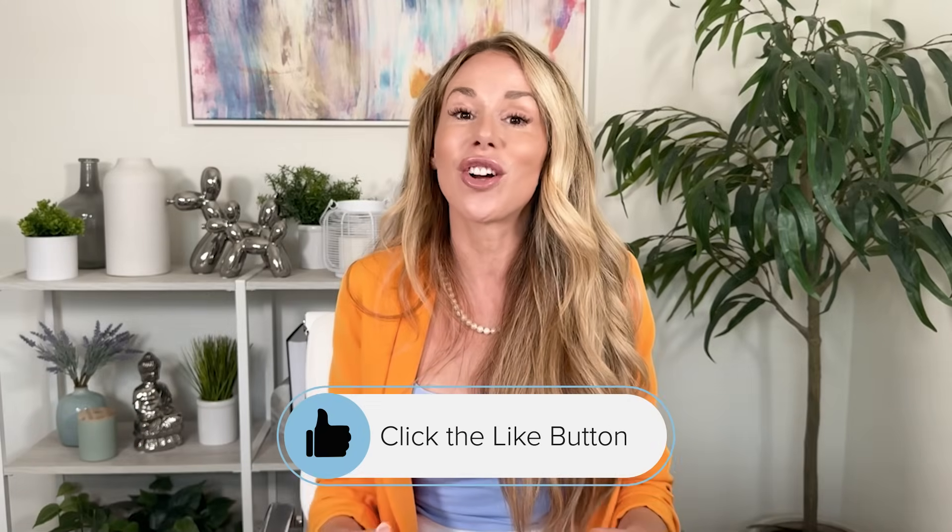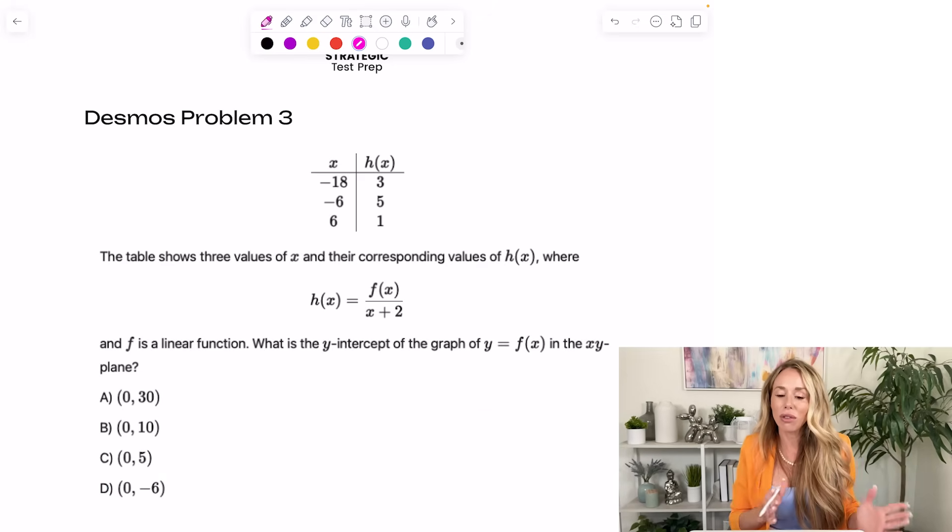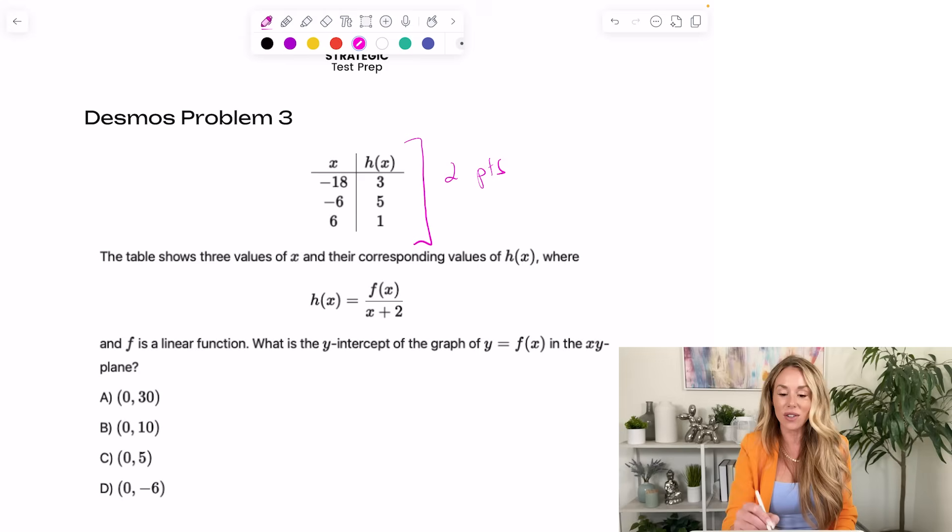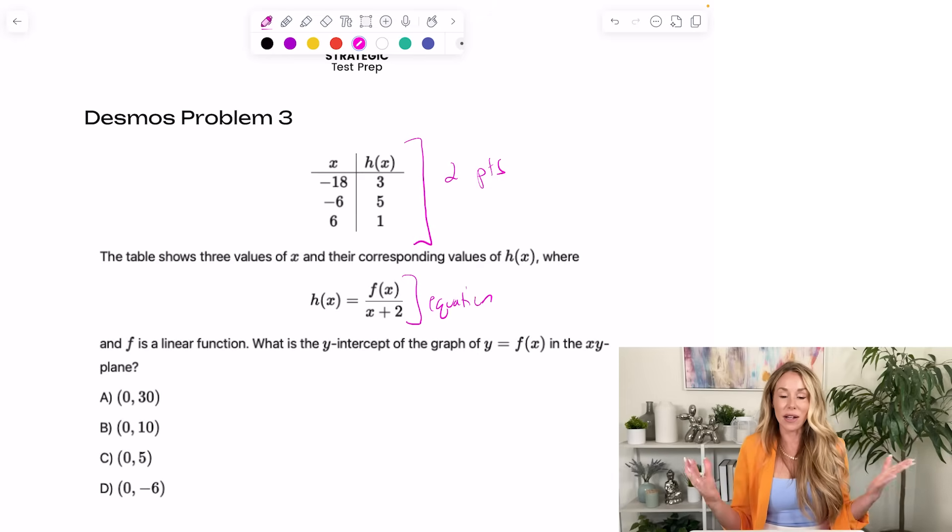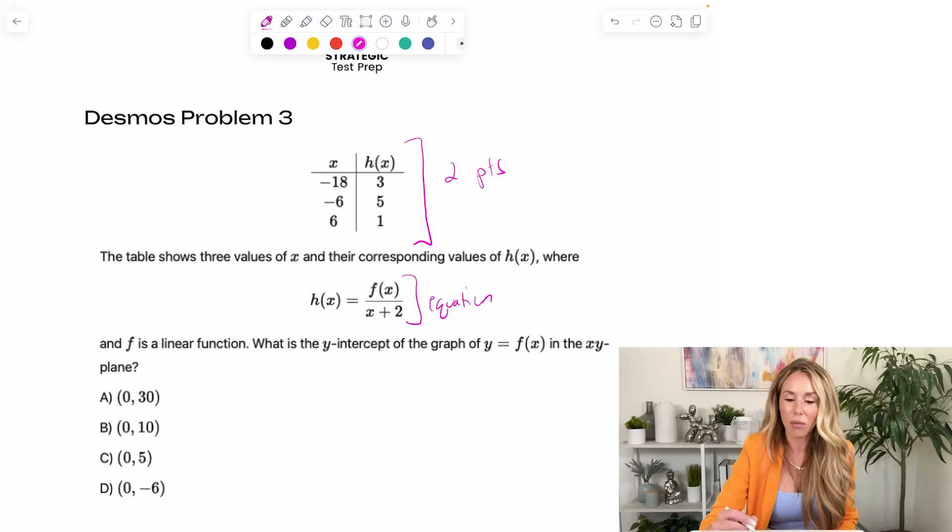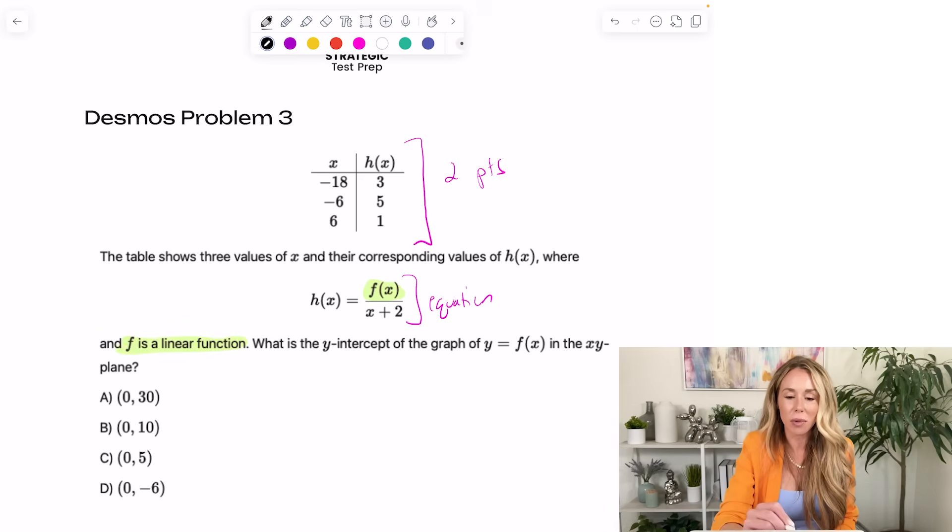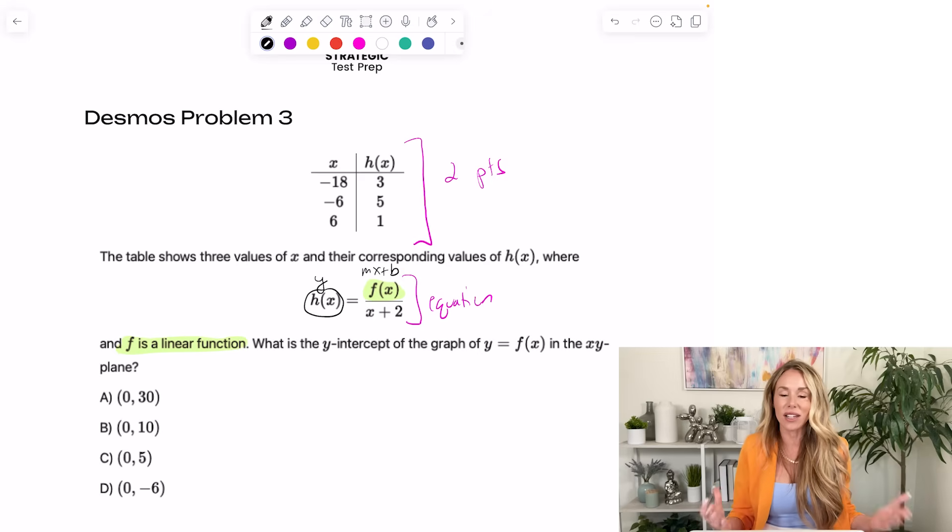Alright, guys, if this is helpful so far, show me some love. Hit the like button below. Alright. This third problem is perfect for a regression. So just to run you through what you want to look for to know if you can run a regression, you need at least two points on the function. And as you can see, the table, they give you three. And you need the equation of the function, which they also provide. Now, what you're going to want to do is recognize that it will not read function notation. So we have an f of x on the top. We're going to have to change that to an actual equation so that Desmos can recognize it when we run a regression. And they said f is a linear function. So essentially, a line is y equals mx plus b. You know, h of x, that's our y out here. So we really just need to put the mx plus b part on the top to signify that that's a line.